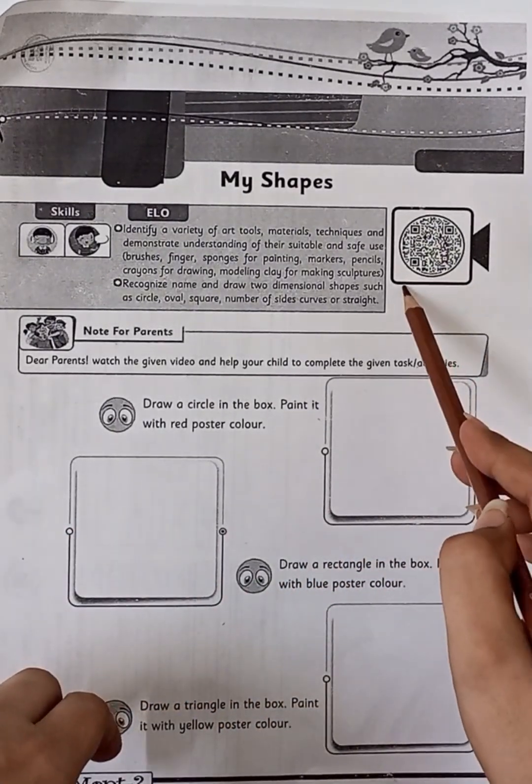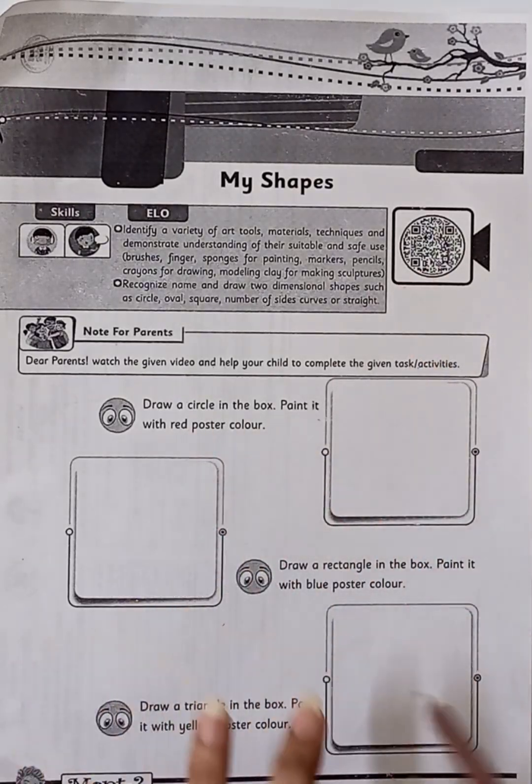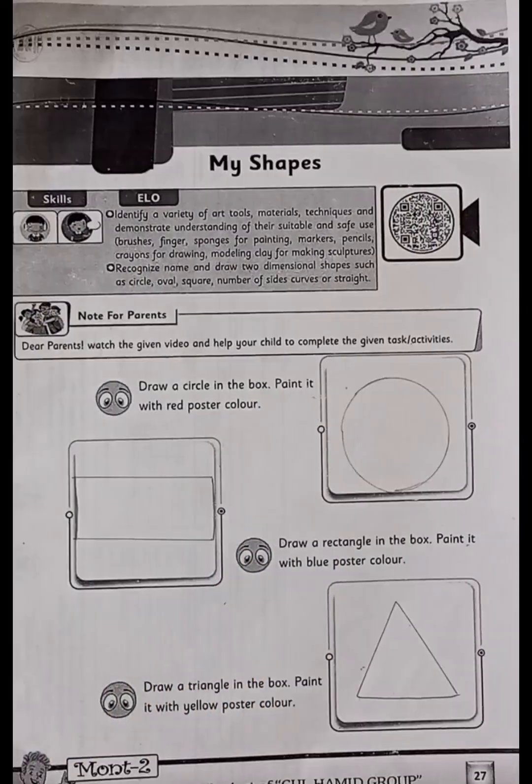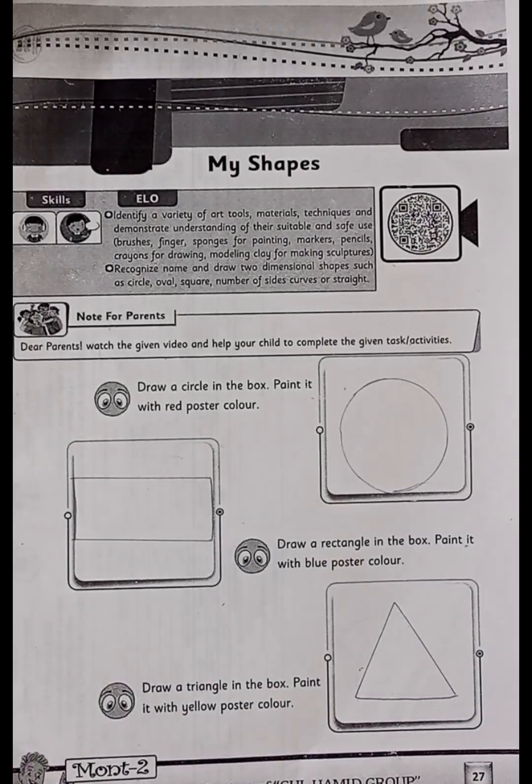Here is a QR code. You can scan from here. So we have created three boxes here. We have created three different shapes. I have drawn shapes here. Now we will do colors. Firstly I will explain to you.